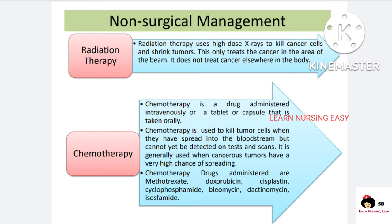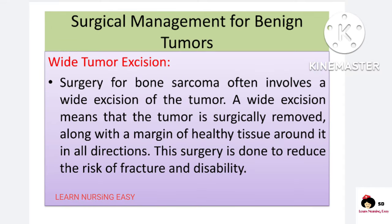In non-surgical management: radiation therapy uses high doses of radiation — either X-rays or photon rays — to kill or shrink cancer cells. Chemotherapy is administered intravenously or orally as tablets to heal the tumor cells and prevent the spread of cancer cells into the bloodstream. The drugs of choice in chemotherapy are methotrexate, doxorubicin, cisplatin, cyclophosphamide, bleomycin, dactinomycin, and ifosfamide.